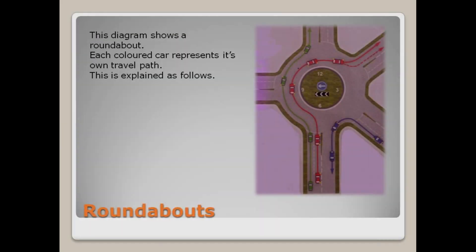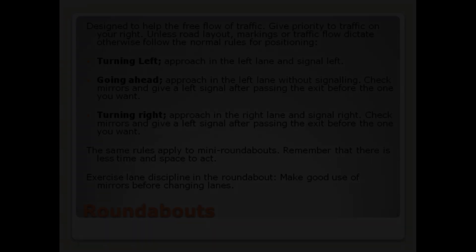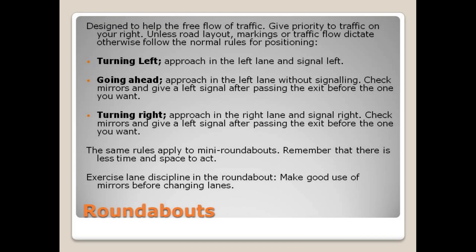Roundabouts. This diagram shows a roundabout. Each colored car represents its own travel path, explained as follows. Roundabouts are designed to help the free flow of traffic. Give priority to traffic on your right, unless road layout, markings, or traffic flow dictate otherwise. Follow the normal rules for positioning. Turning left: approach in the left lane and signal left. Going ahead: approach in the left lane without signaling.